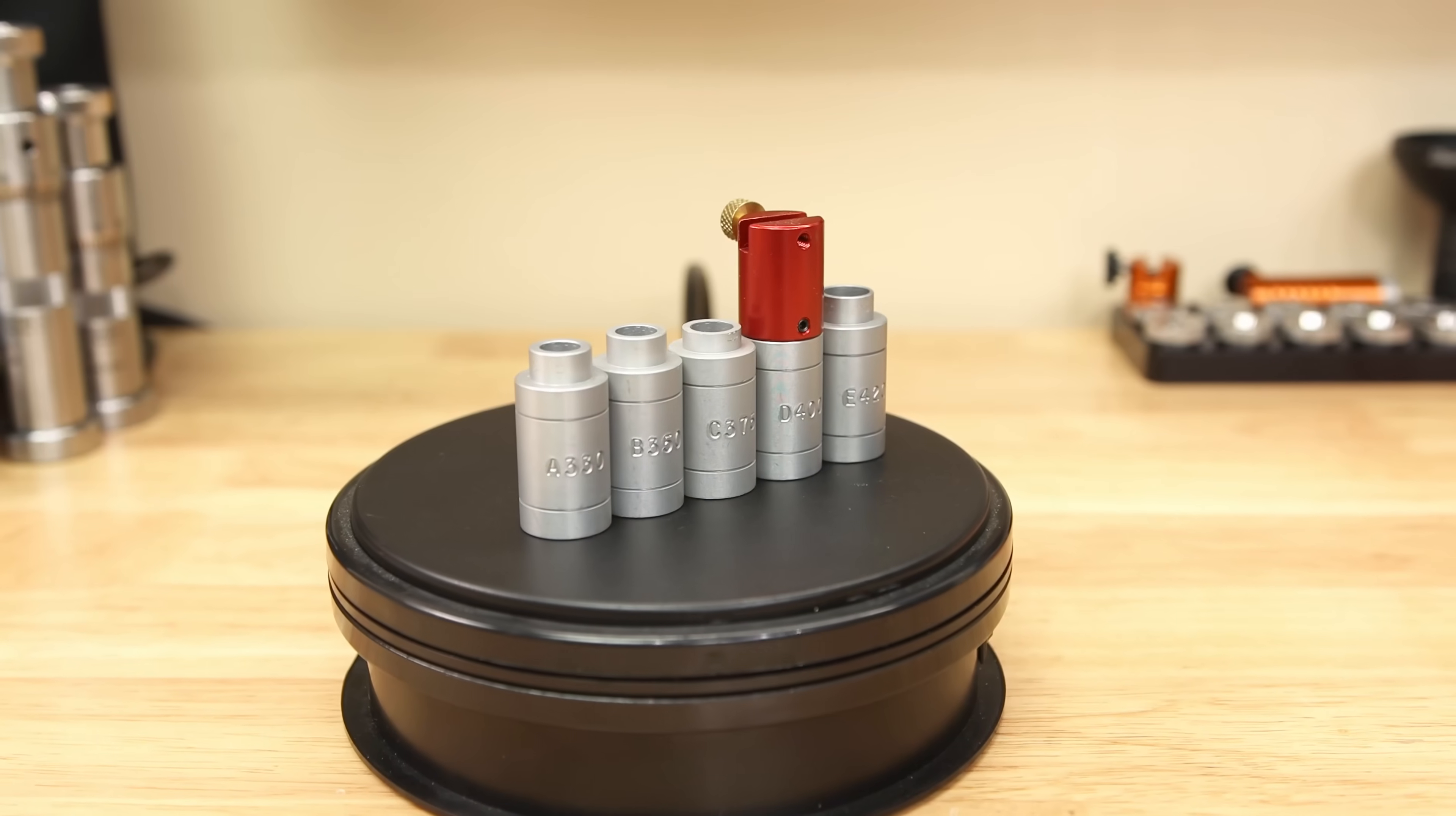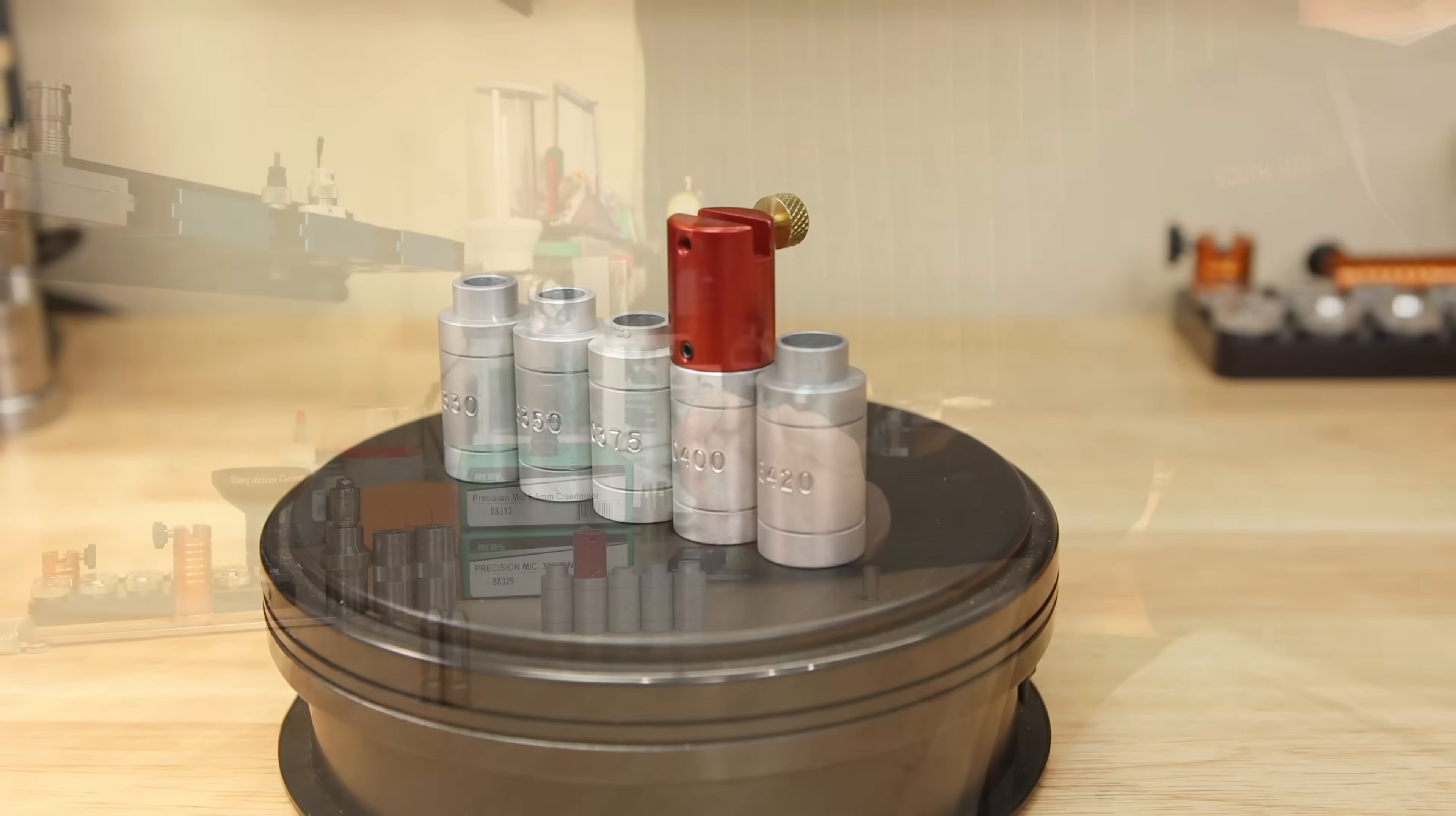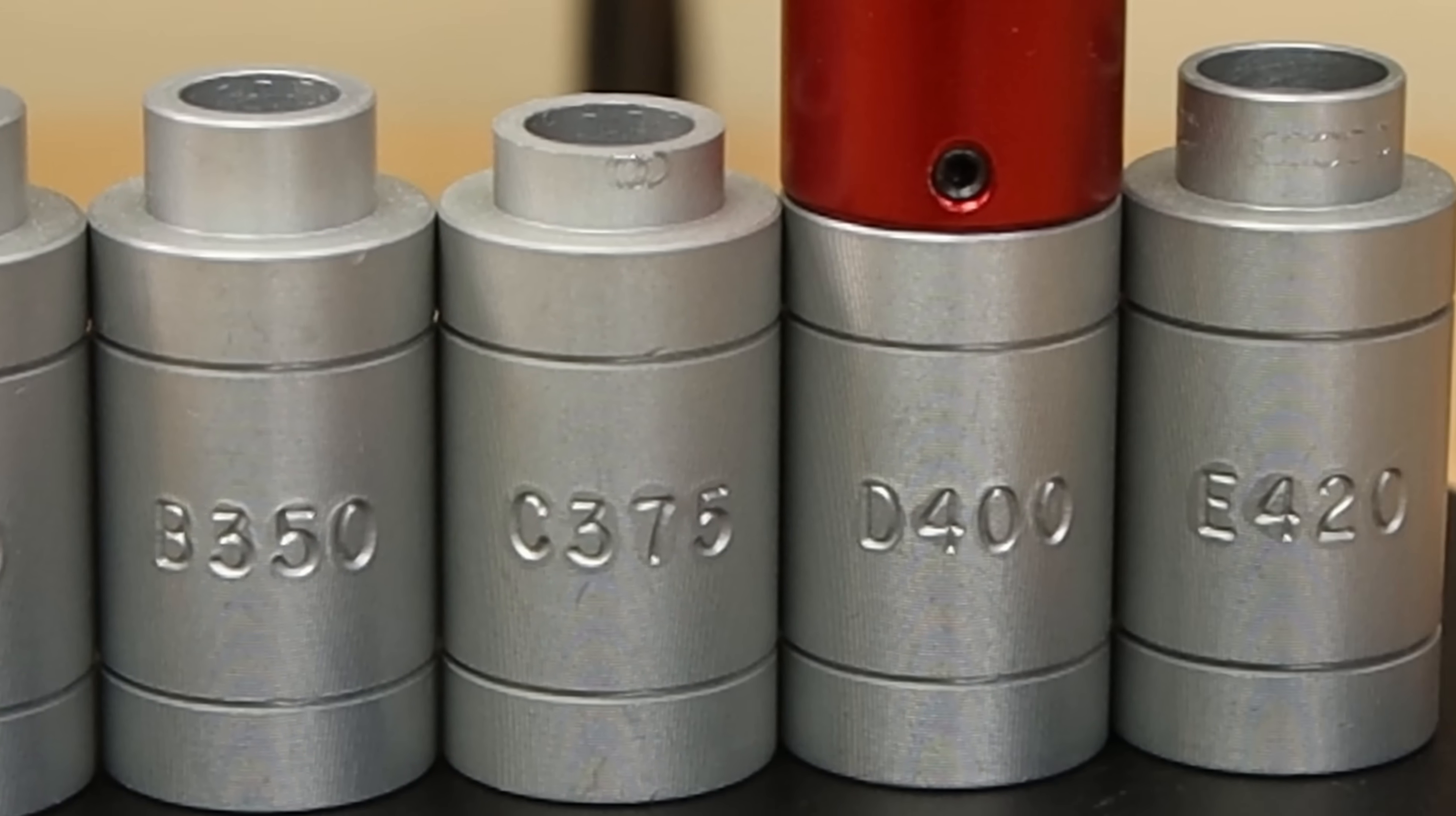The next option and the cheapest that I would truly recommend using is from Hornady. This kit offers comparator sizes in the exact sizes that are going to be referenced in the SAMI drawings: 0.330, 0.350, 0.375, 0.4, and 0.420.